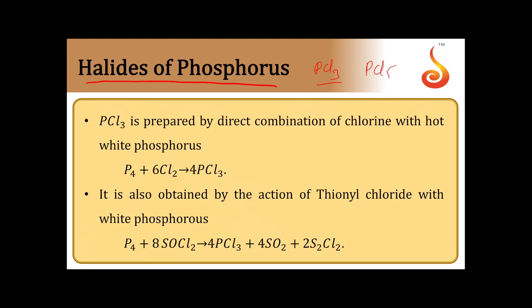PCl3 can be prepared by direct combination of chlorine with hot white phosphorus. So phosphorus plus chlorine gives PCl3. Here the phosphorus must be white, because white phosphorus is more reactive in nature, and chlorine must be in limited quantity — because when you take chlorine in excess quantity, you are going to get PCl5. So phosphorus with limited quantity of Cl2 gives PCl3.